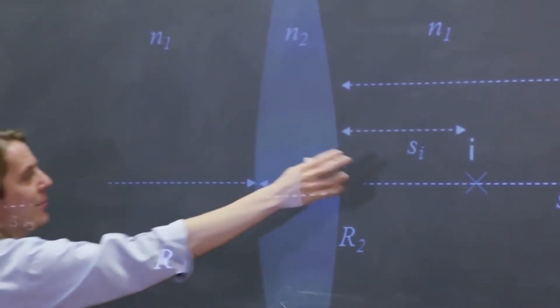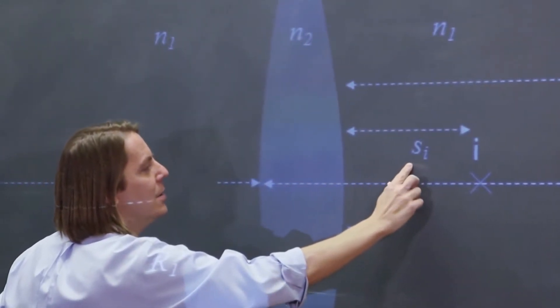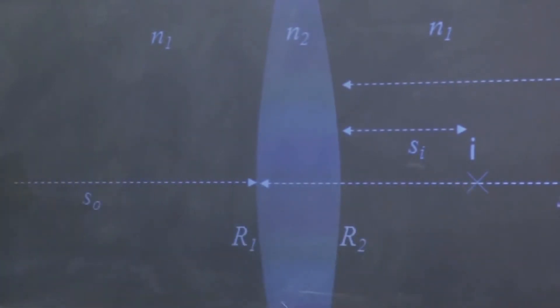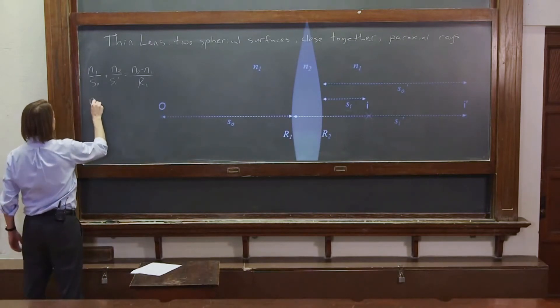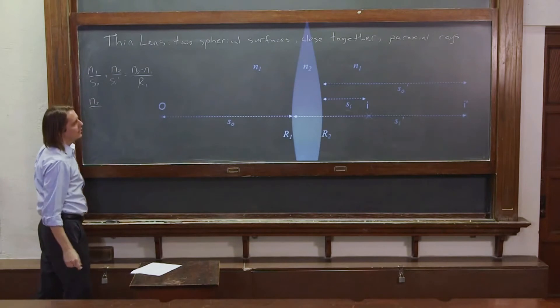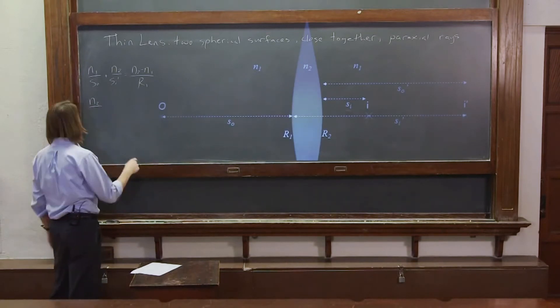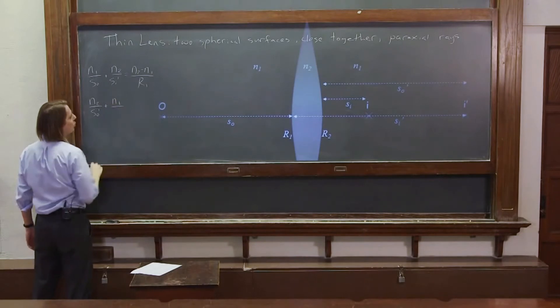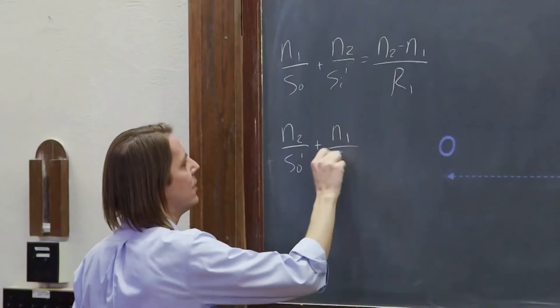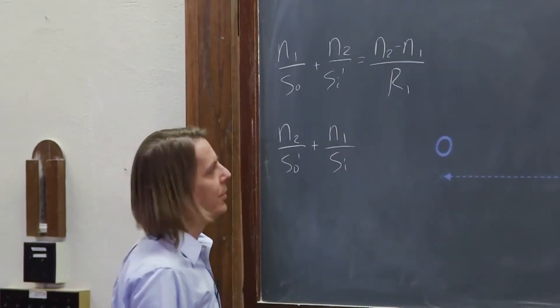So we're going to take the prime off because we're not talking about an intermediate image anymore. We're talking about a real image at SI. So for that one we would write we start at N2 and that would be at SO prime. We're going to N1 at SI.